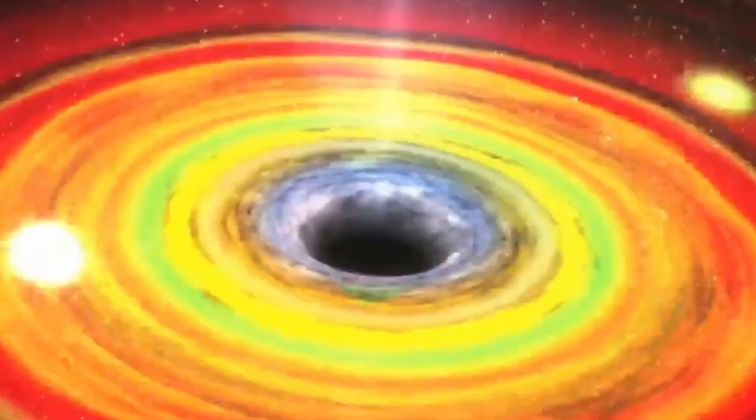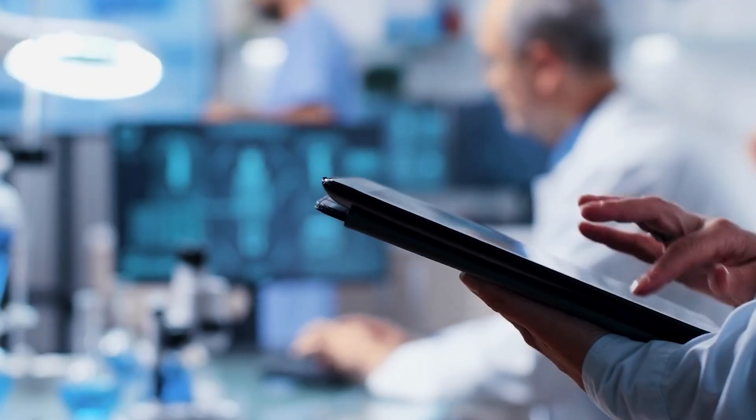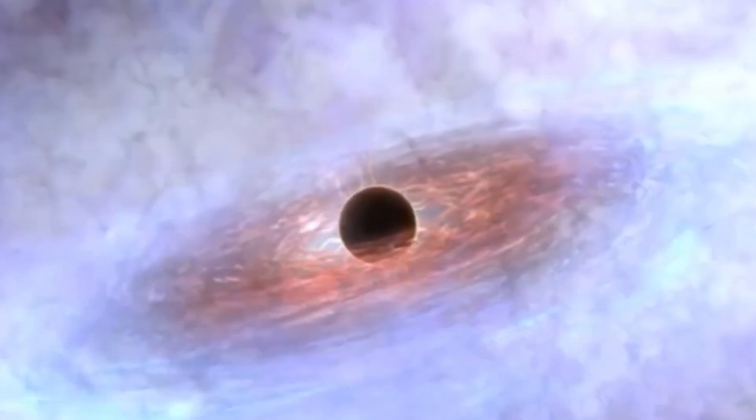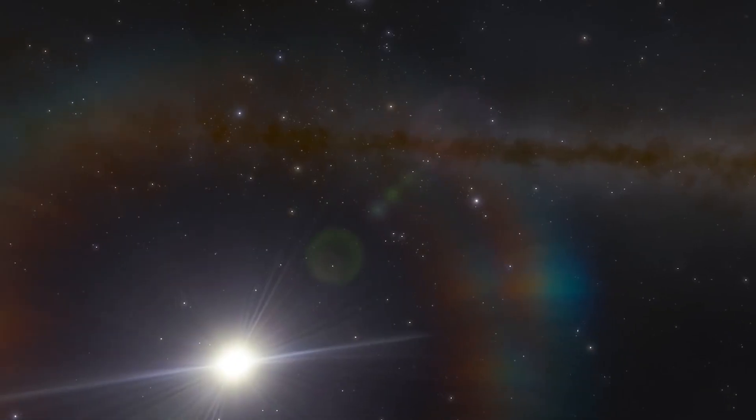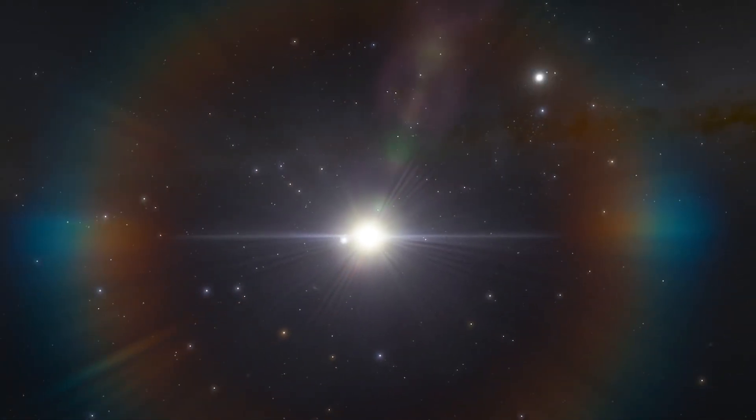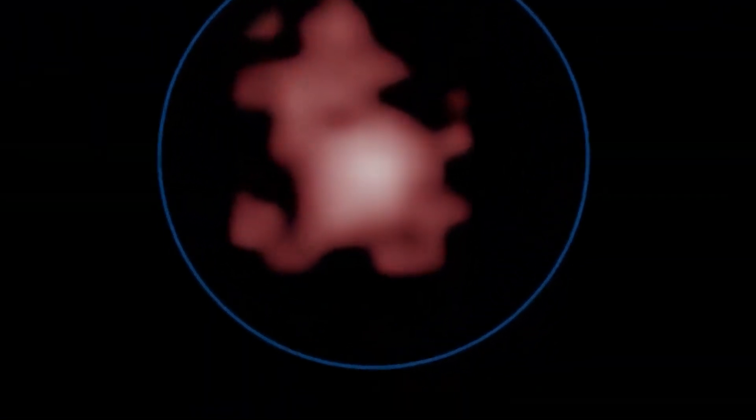While radio jets have been detected in many galaxies, including the Milky Way, the researchers are unsure of how Alcyoneus grew to be so massive. At first, they thought it could be due to an unusually large black hole, an exorbitant amount of stardust or incredibly powerful jet streams. However, these features appear relatively normal compared to other radio galaxies, according to the statement.